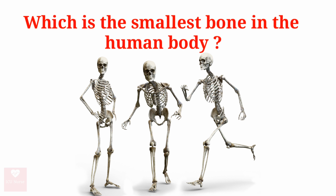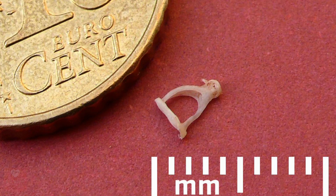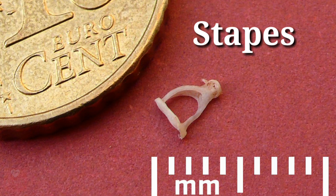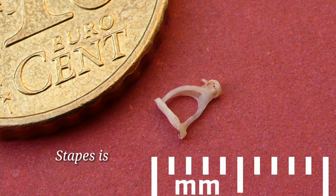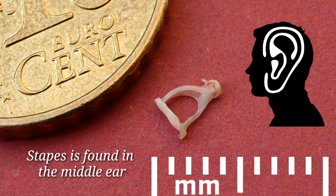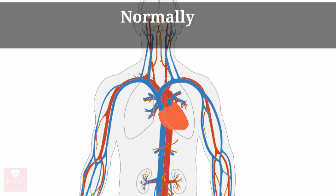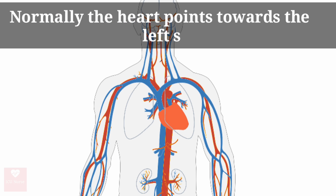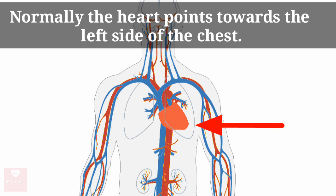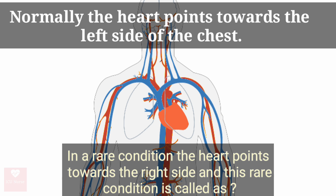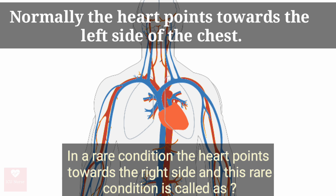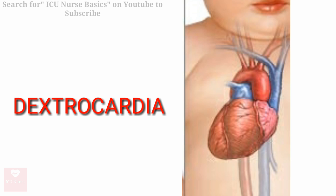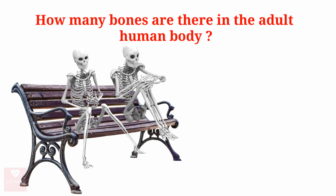Which is the smallest bone in the human body? The smallest bone in the human body is the stapes. The stapes is found in the middle ear. Normally the heart points towards the left side of the chest, but in a rare condition the heart points towards the right side, and this rare condition is called dextrocardia.